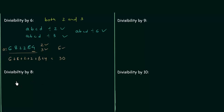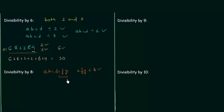Now divisibility by 8: a number is divisible by 8 if the number formed by its last 3 digits is divisible by 8. For example, for number ABCDEFG, we check if EFG is divisible by 8. Take the number 783467320: the last 3 digits form 320, and 320 ÷ 8 = 40. Since 320 is exactly divisible by 8, the number 783467320 is divisible by 8.